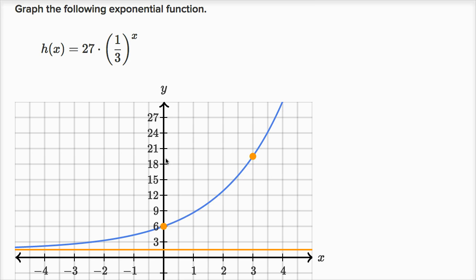So let's think about it. The easiest thing I could think of is the initial value. Its initial value is when x equals zero. x equals zero is one third to the zero power, which is just one, so you're just left with 27 times one, or just 27. That's why we call this the initial value. When x equals zero, h of x equals 27, and we're graphing y equals h of x.